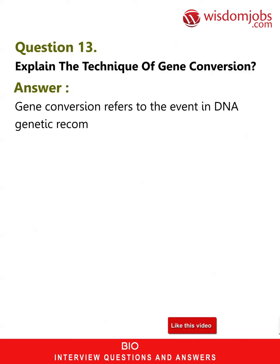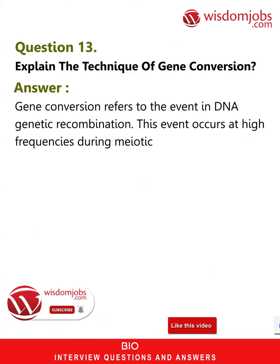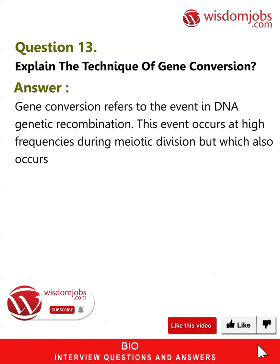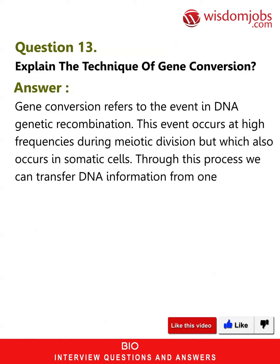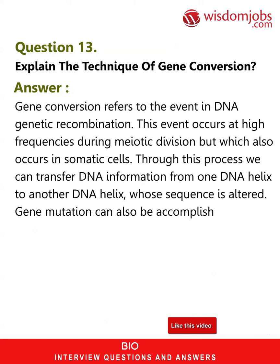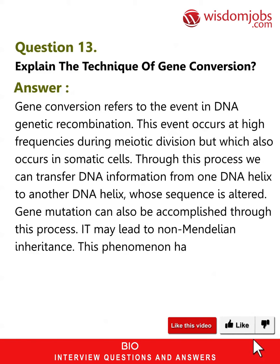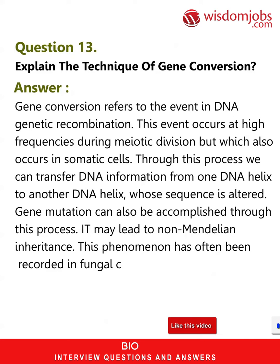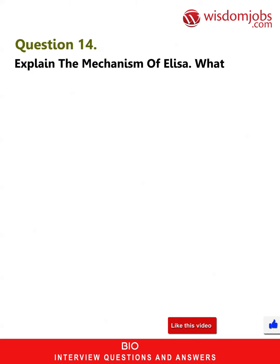Question 13: Explain the technique of gene conversion. Answer: Gene conversion refers to an event in DNA genetic recombination. This event occurs at high frequencies during meiotic division but also occurs in somatic cells. Through this process, DNA information can be transferred from one DNA helix to another DNA helix whose sequence is altered. Gene mutation can also be accomplished through this process. It may lead to non-Mendelian inheritance. This phenomenon has often been recorded in fungal crosses.